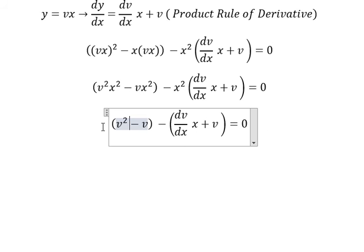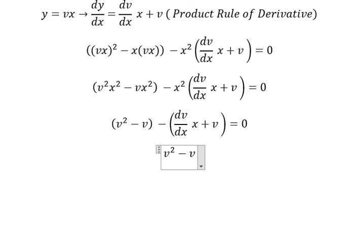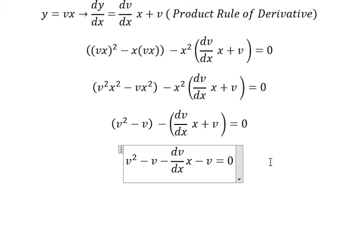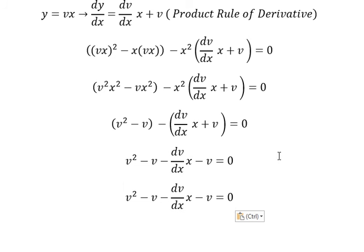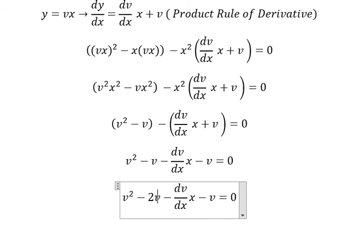Now we need to open parenthesis. Similar for this one. Now negative v, negative v, you got negative 2v. This one we put on the right.